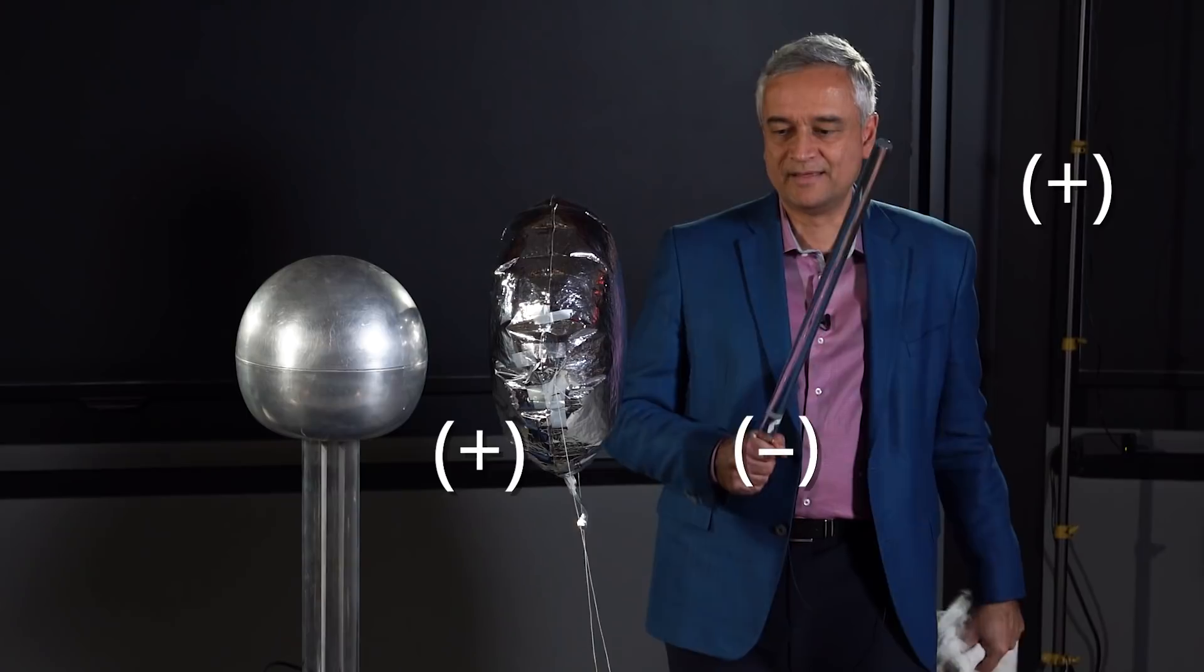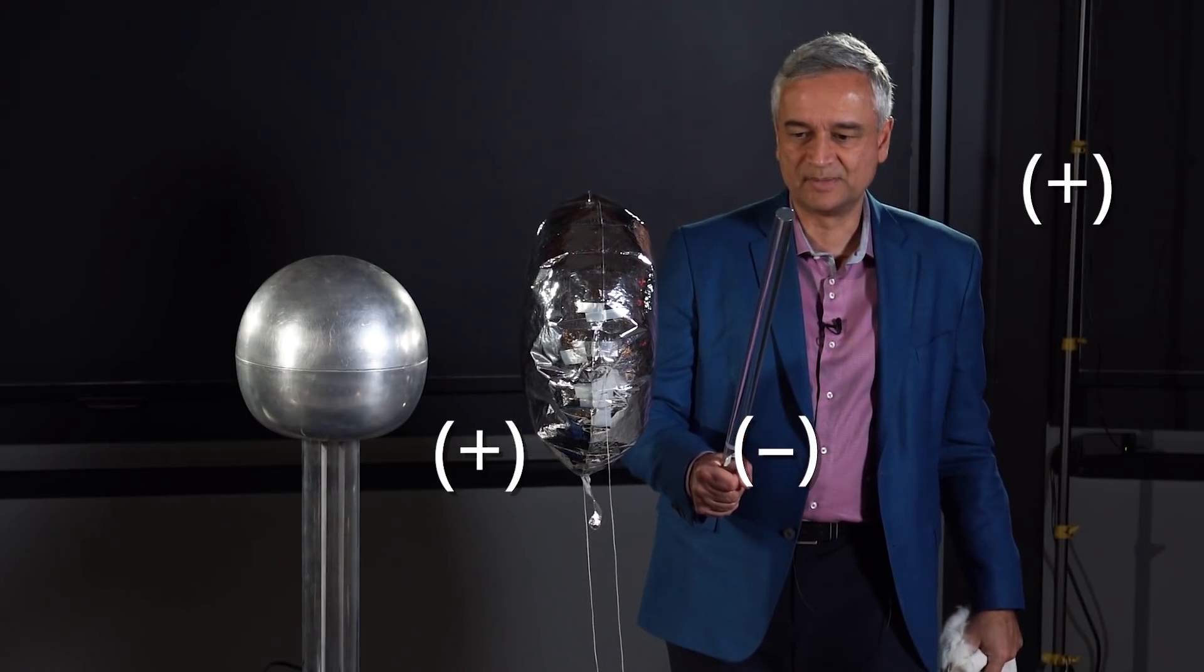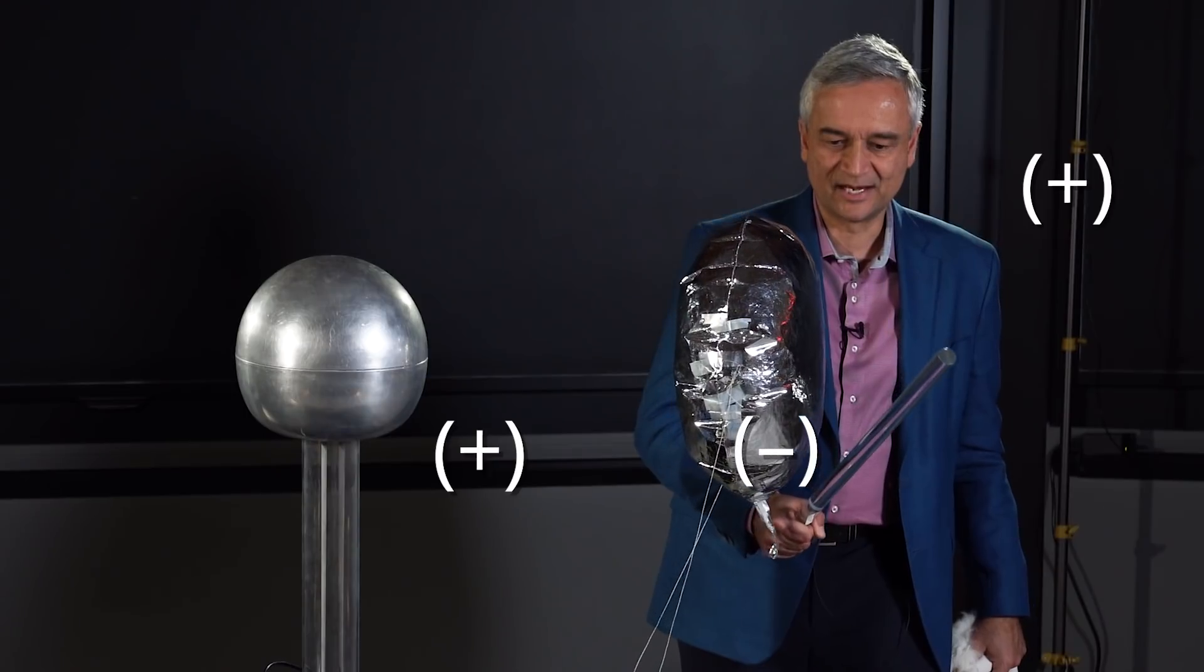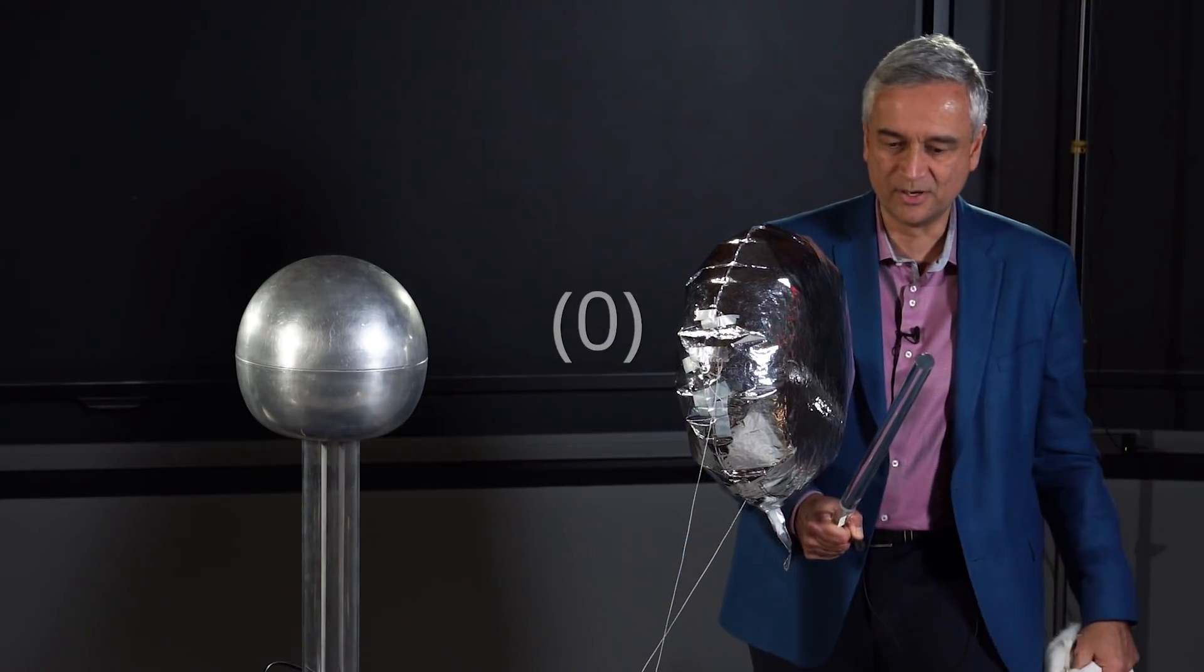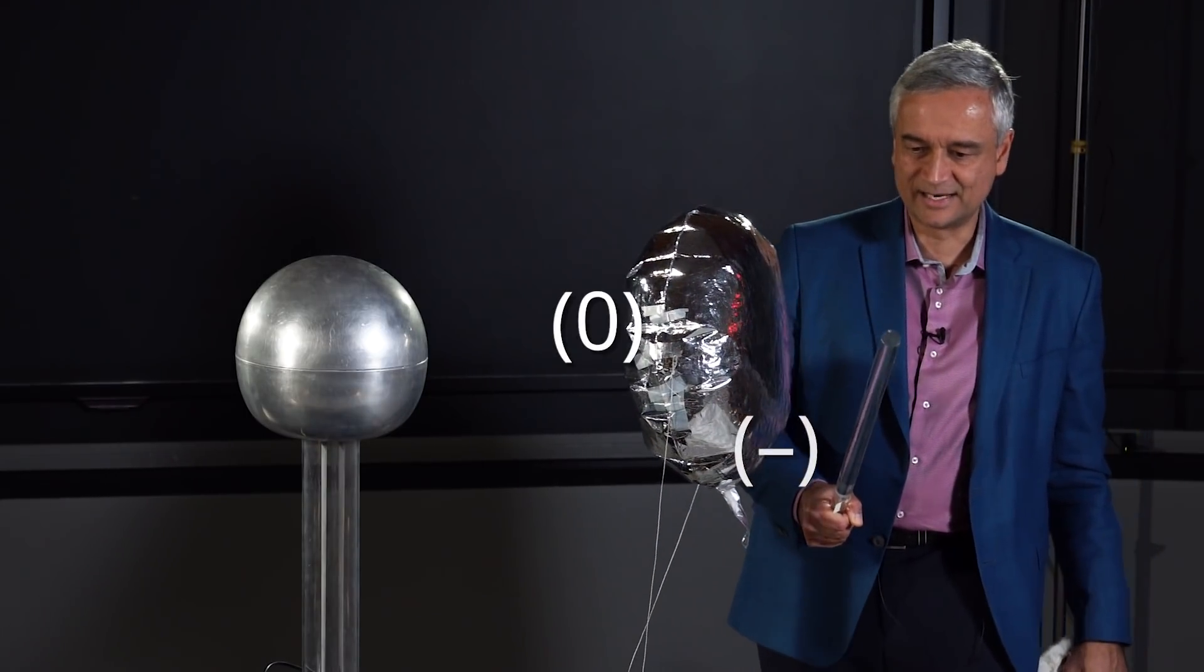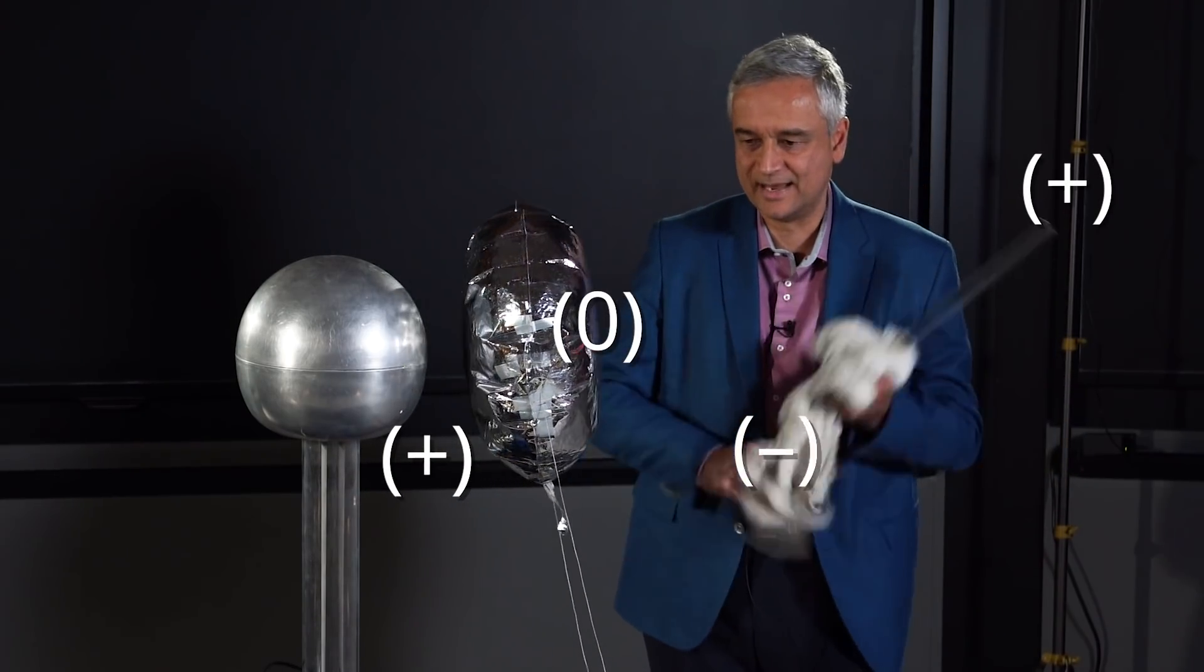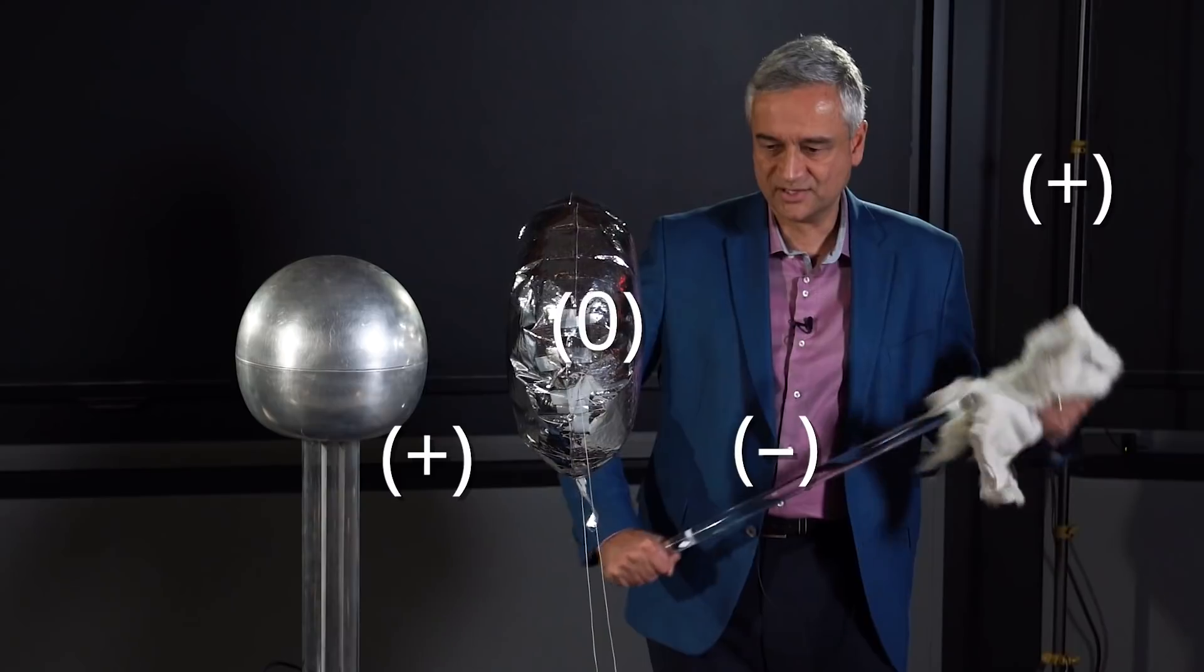As soon as that happens, then I have the negative side of the balloon close to the positive rod, and so the positive rod is now attracting the negative side of the balloon. So my balloon is at this moment neutral in total, but it has a negative side and a positive side, and the positive rod is attracting the negative side of the balloon, and that's what's going on here.